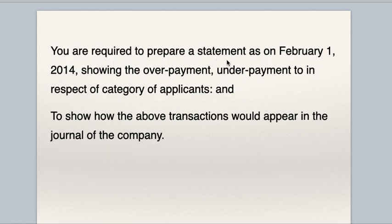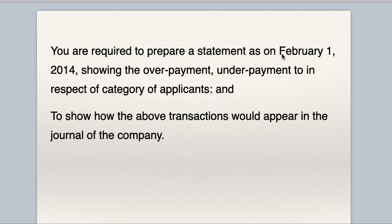You are required to prepare a statement as on February 1st showing the overpayment and underpayment in respect of each category of applicants, and to show how these transactions would appear in the journal of the company. On 1st February, the company will refund any excess amount received after adjusting allotment and call. That is the reason they have asked you to prepare a statement on 1st February.